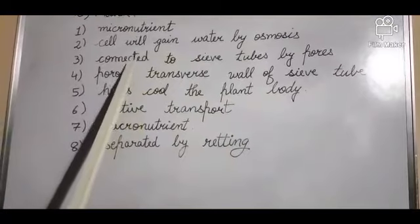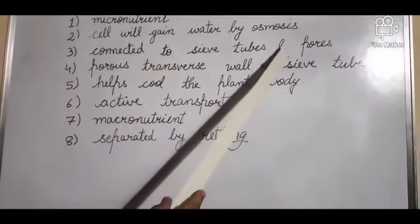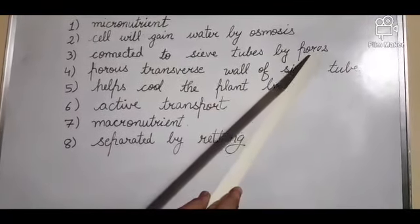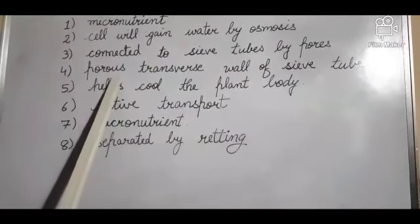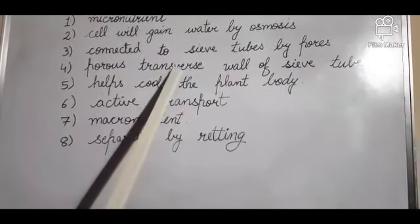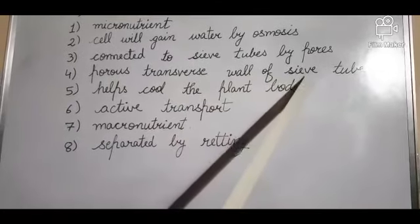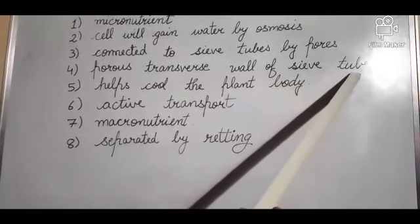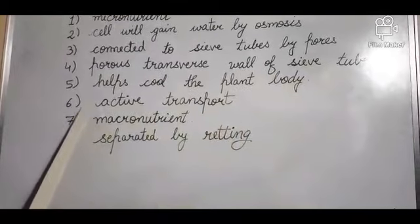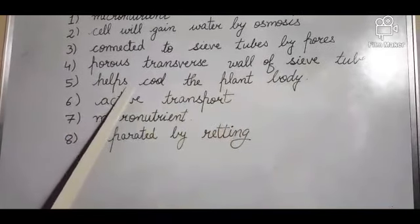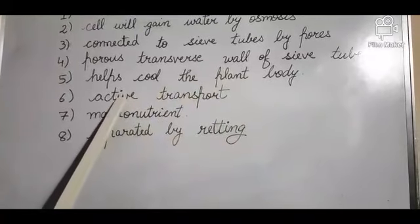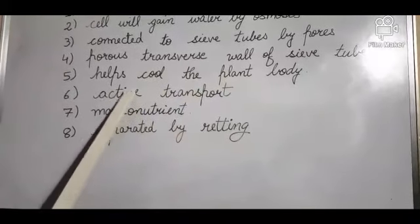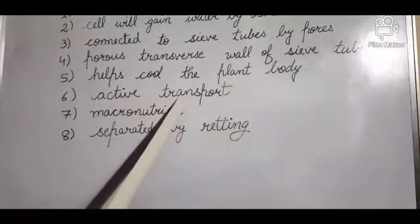Then companion cells - these are connected to the sieve tubes by pores. Then we have the fourth one, sieve plates - these are porous transverse walls of the sieve tube in phloem. Then transpiration - its benefit is it helps cool the plant body. Then carrier proteins, as I told earlier, they help in active transport from lower concentration to higher concentration. Water will move along with mineral nutrients.